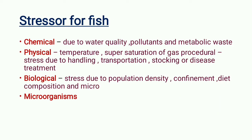Today we will see what stresses can happen in fish. If there is any disease, there are stresses involved. They can be chemical, physical, and biological. Chemical stresses for fish are due to water quality factors like temperature, pH, and turbidity, which can stress the fish and cause disease. They can also be due to pollutants and metabolic waste.